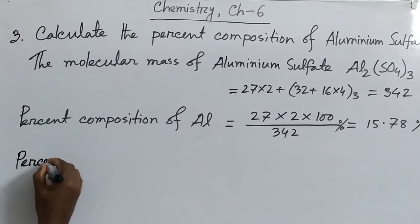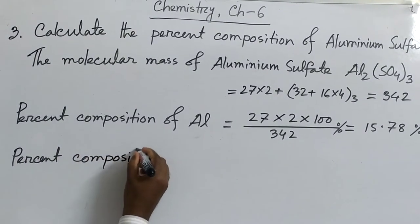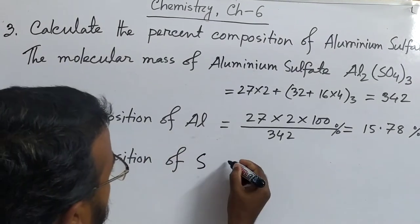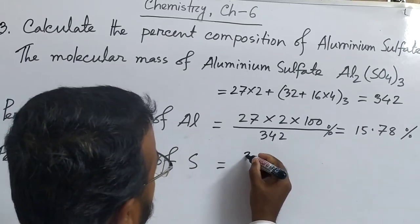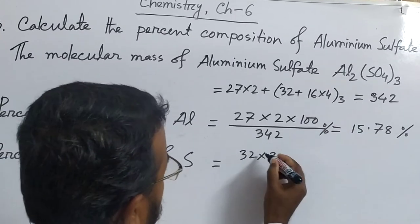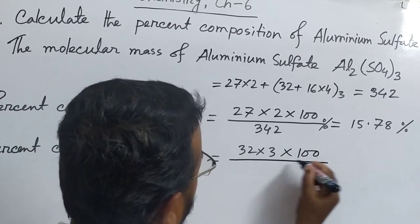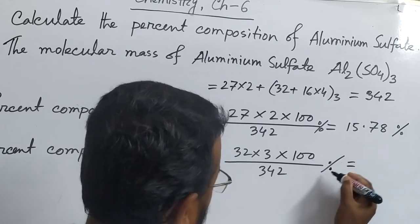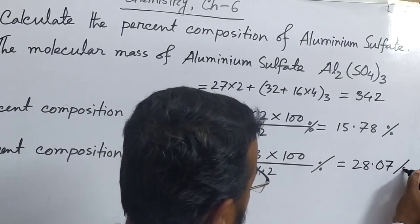Second, percent composition of sulfur. How many sulfur atoms? 3. So it will be 32 × 3 × 100 ÷ 342. The atomic mass of sulfur is 32 and the number of sulfur atoms is 3. We get 28.07 percent.